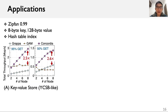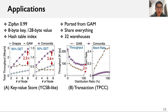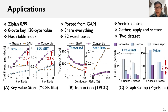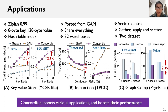To demonstrate Concordia's practical benefits, we also build three applications on it. The first is a key-value store: in YCSB-like workloads, Concordia outperforms the second fastest system by up to 2.6 times. The second application is transaction processing: running TPC-C workloads, Concordia achieves two times higher throughput and a much lower abort rate. The third application is graph computation: Concordia reduces the runtime of PageRank by 2.3 times. In sum, Concordia supports various applications and boosts their performance.